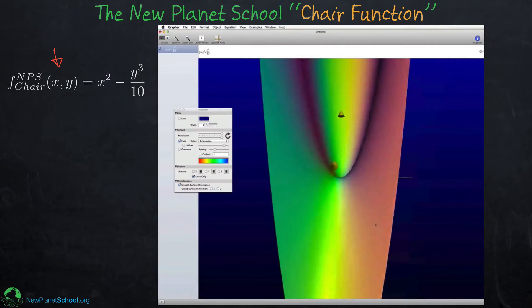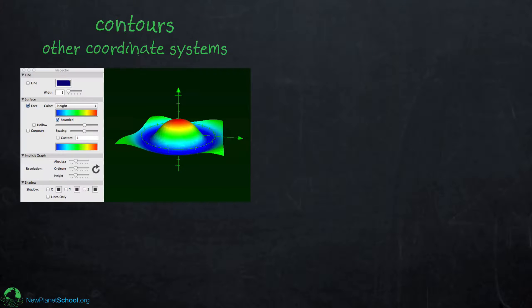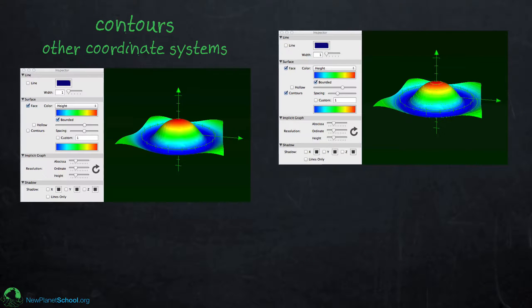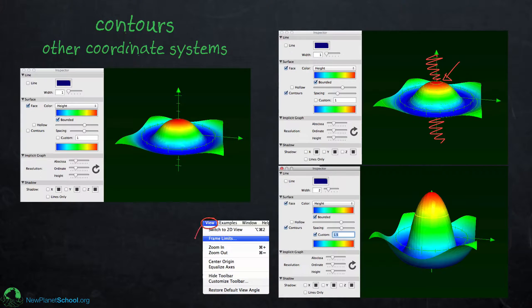That shows you how to make a function and go into the Inspector to make lots of different customizations. Similarly, if you're in a different coordinate system, you can go into the Inspector and add contours to that surface as well. One other thing: if your graph looks like it's wasting space, go under View, then Frame Limits, and you can set all the ranges of the curves to get something that fills the graph better.